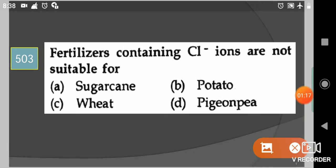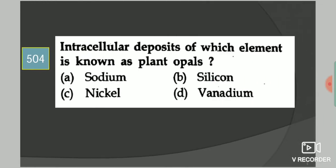Next question: Fertilizers containing chlorine ions are not suitable for? Your options are sugarcane, potato, wheat, pigeon pea. Your answer is option B, potato.